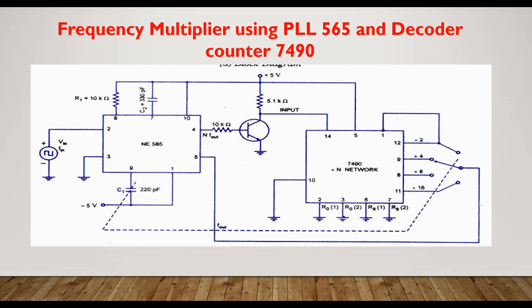At the collector of the transistor, we get an inverted version of its base waveform — that is, the output at the collector is the inverted version of the base signal. The output frequency is adjustable. This is the basic information of this frequency multiplier using PLL 565 and decoder counter.